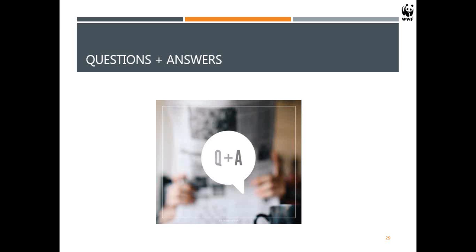First question: can we assess the impacts from logging with this method? A lot of logging in the DRC is very selective. If your logging is not apparent in your forest cover map, you won't see the effects of logging. That's unfortunately the drawback of this method — I can't tell you whether an area has been logged. Maybe if there are logging roads in my forest cover, I can see those edges. But this is not a direct monitoring method like spectral mixing or radar data that really helps you detect areas that are logged in the middle of the forest.